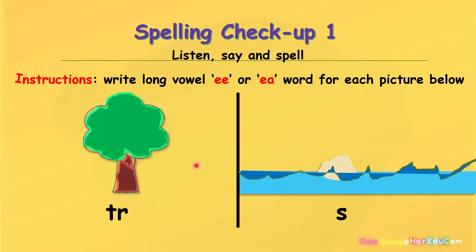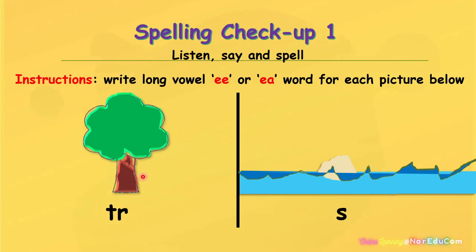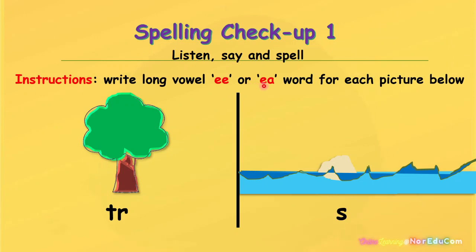Now let's write long vowel EE or long vowel EA word for each picture below. What is this? Yes, this is a tree. How to spell tree? And which long vowel do we need to use? Is it EE or EA?